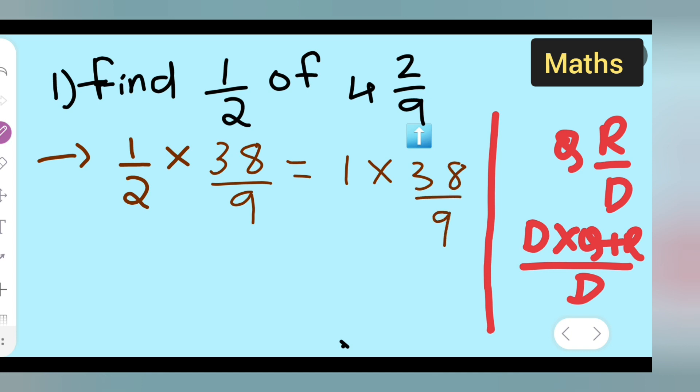Here it will be 9. Here it will be 2. Right. So, 2 1s are 2. 2 1s are 2. Carry 1 here it will be. So, 2 9s are 18. So it is 19 upon 9. So, basically your answer is 19 upon 9.